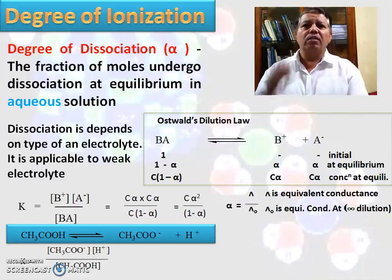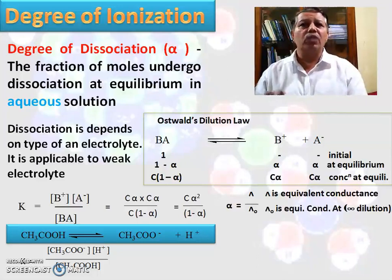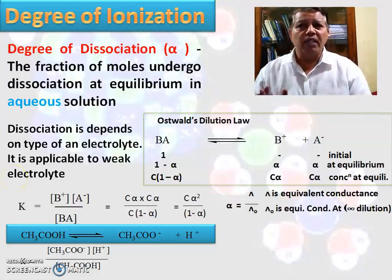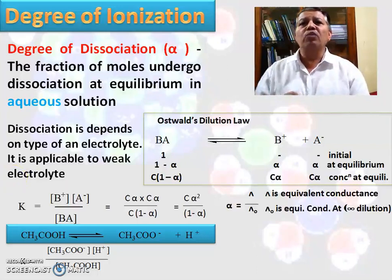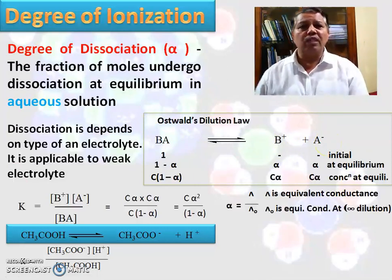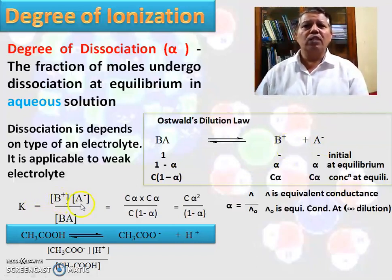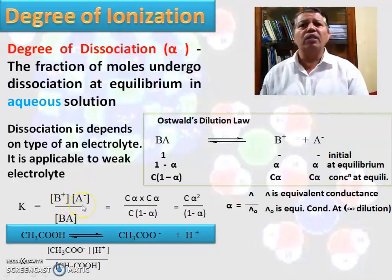When these electrolytes dissociate in water, how much they have dissociated can be calculated in terms of the degree of dissociation, denoted by alpha. With respect to the Oswald dilution law, consider BA as the electrolyte. When BA dissociates into B⁺ and A⁻ ions, the equilibrium constant K equals the concentration of B⁺ times concentration of A⁻ divided by the concentration of BA.